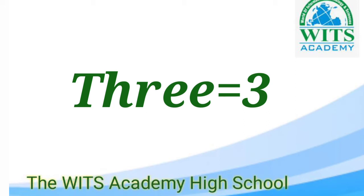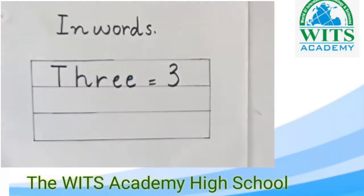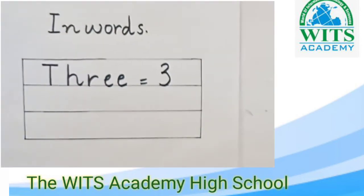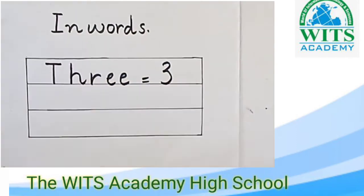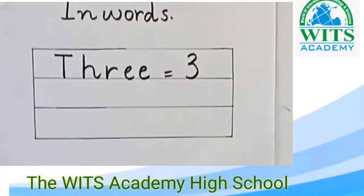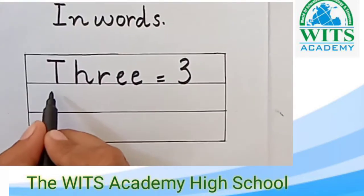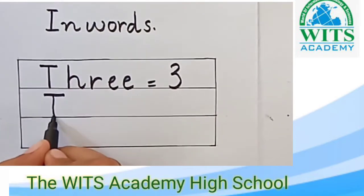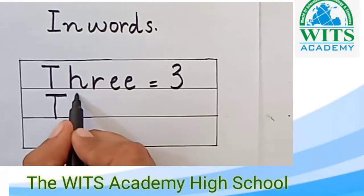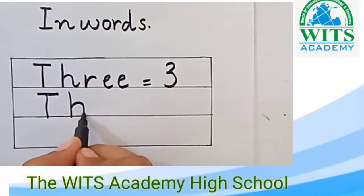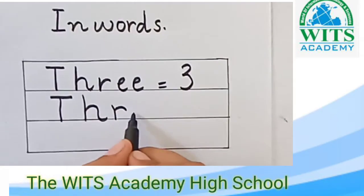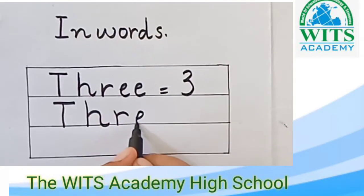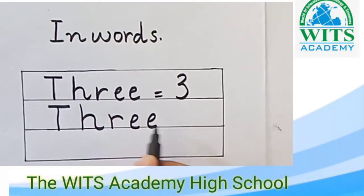This is the spelling of 3. Now I will tell you how to write the spelling of 3. First we will write capital T, then small h, then small r, then small e — two times.